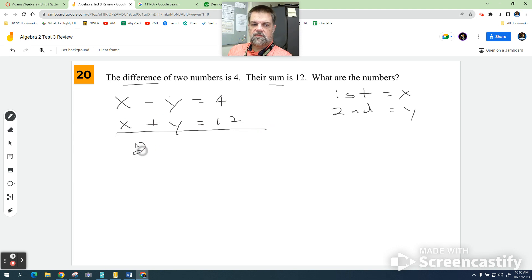Add them up, I get 2x equals... these cancel... 4 plus 12 is 16. So x equals 8. That means the first number is equal to 8.